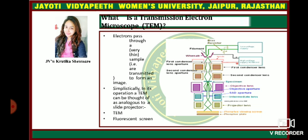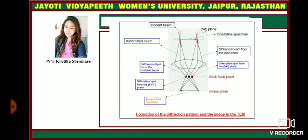In the transmission electron microscope, the electron beam is transmitted through the specimen. The incident beam passes through the specimen and there is a transmitted beam which gets concentrated at a spot. There is a diffraction spot from the incident beam, and it is the image of the specimen which is projected into the image plane.